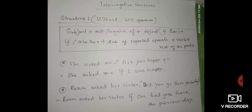Second example: 'Ranu asked her sister, did you go there yesterday?' The reported speech starts with an auxiliary verb, so we place 'if.' Think of it as assertive: 'You went there yesterday' — past indefinite tense. In indirect speech, past indefinite becomes past perfect. 'You' becomes 'she.' 'Yesterday' becomes 'the previous day.' So the change is: 'Ranu asked her sister if she had gone there the previous day.'